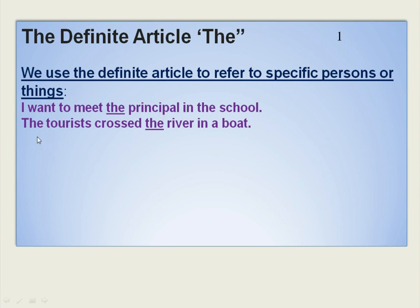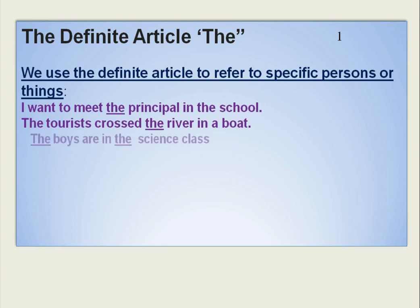Similarly, 'The tourists cross the river in a boat.' Here, the definite article is used before the common noun 'river'. When we say 'THE river', we are speaking about a specific or particular place. Therefore, we use the definite article.